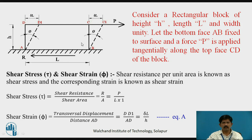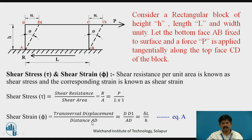We consider a block ABCD having length L, fixed at the base and subjected to a force P applied tangentially at the top face CD. There will be a deformation in the body to shape ABC1D1. Shear stress tau is the shear resistance per unit area, and the corresponding strain is shear strain phi. Shear stress tau equals shear resistance divided by shear area, where shear area is length times unit width. Shear strain equals transverse displacement DD1 upon distance AD, that is H. We treat this as equation 1.